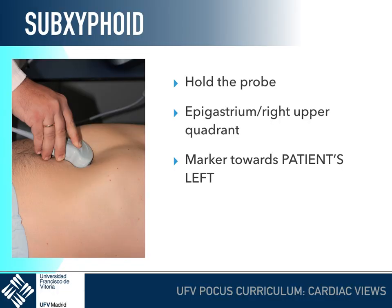We need to hold the probe in a peculiar way — not like a pen as normally, but in a flat position to avoid placing our hand between the belly, the skin surface, and the probe. We are going to place the probe in the epigastrium or maybe the right upper quadrant to use the liver as an acoustic window. For this transverse cut, we are going to place the marker towards our patient's left, which appears on the right side of the screen during a cardiac evaluation.